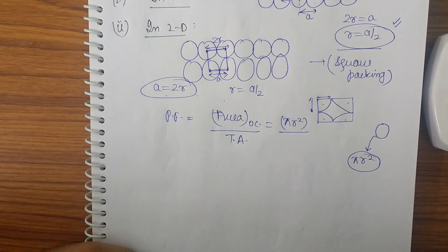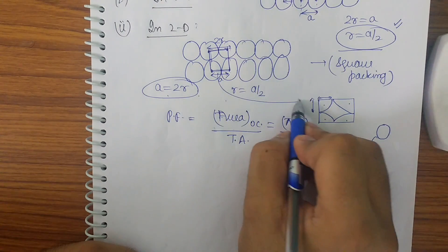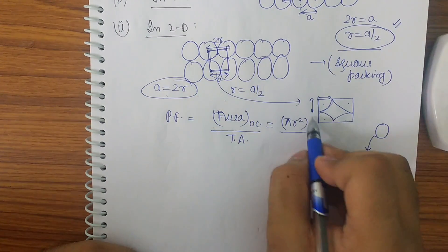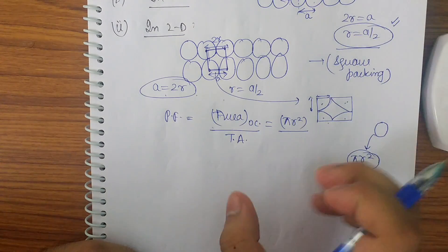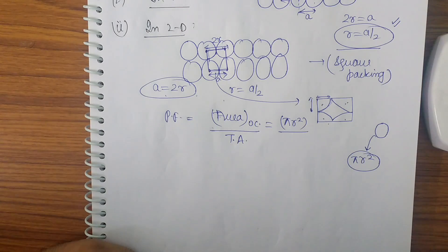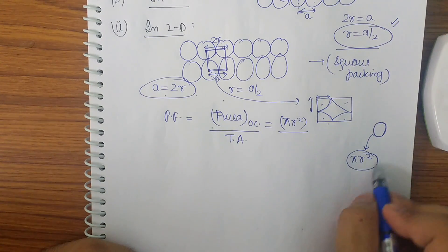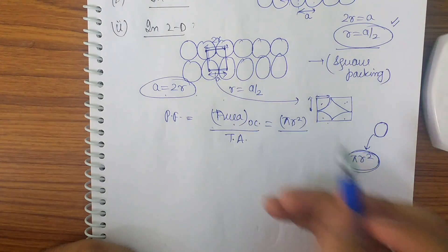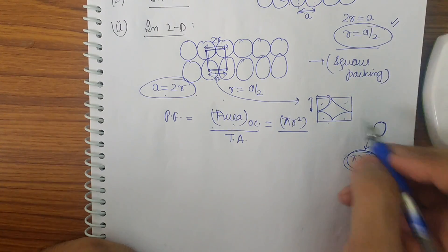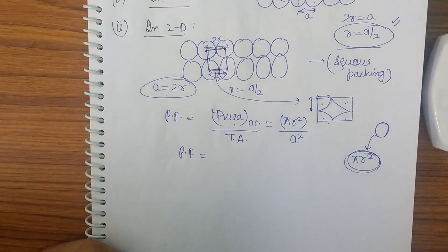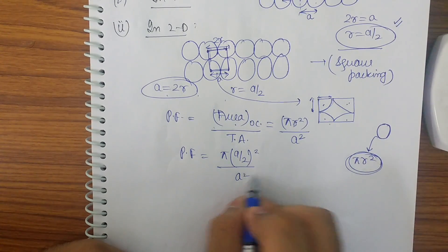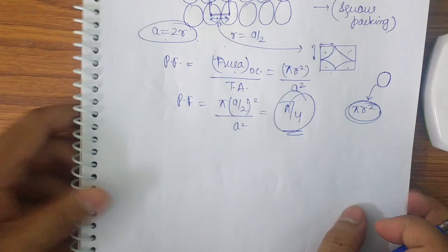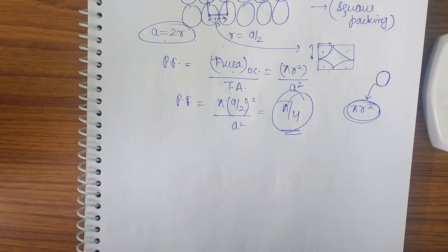To find the packing fraction for square packing, take the square unit cell. You can see four quadrants of a circle at the corners, which together make one full circle of radius r. So area occupied = πr². The total area is a². Since r = a/2, the packing fraction = π(a/2)²/a² = π/4.